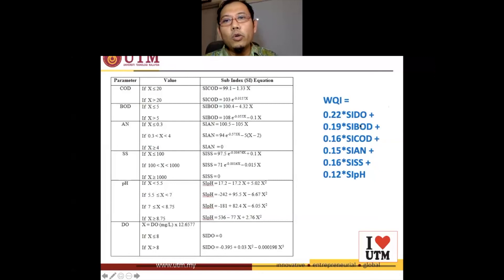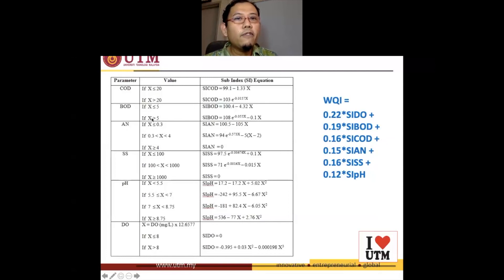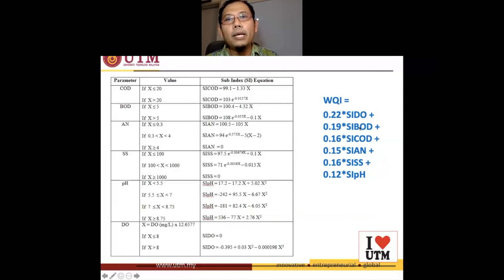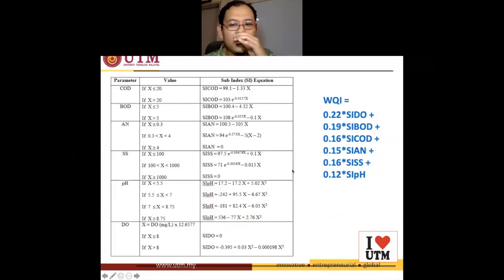Let's say your BOD is 25. Look at this formula: if BOD is less than 5, you use this formula; if greater than 5, you use this other formula. So if your BOD is 25, you use the greater-than-5 formula, put it into the equation, obtain your sub-index of BOD, and plug it into the main WQI equation — and eventually you will get your water quality index.